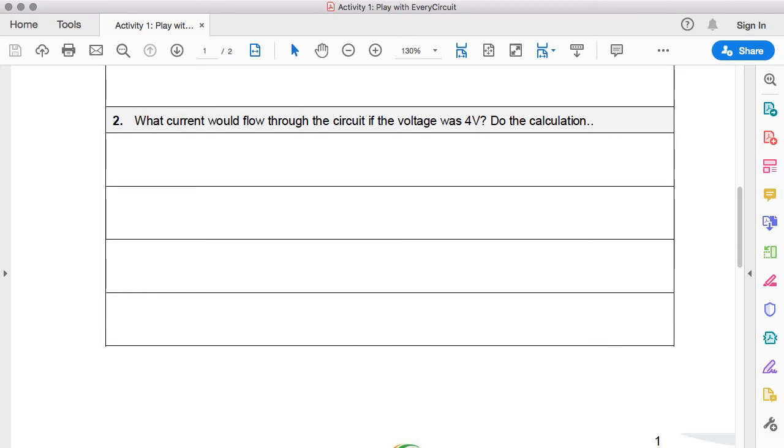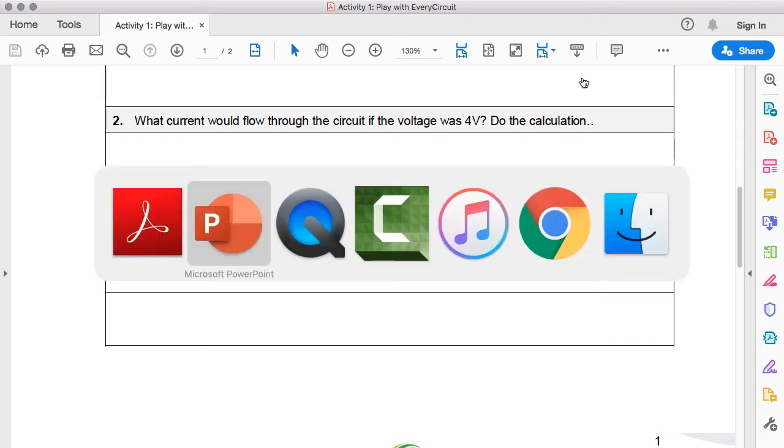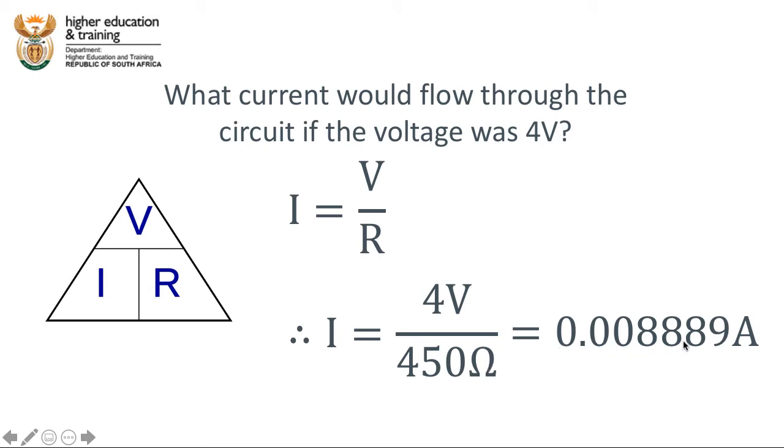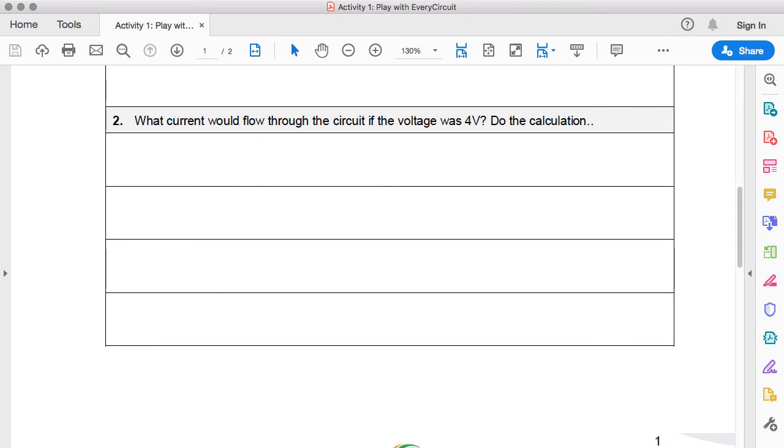Now it asks, what current would flow through the circuit if the voltage was 4 volts? We need to calculate current, so we need to rearrange this mathematical expression to get current is equal to voltage divided by resistance. The resistance hasn't changed, that's still 450 ohms. Therefore, the current is equal to 4 volts divided by 450 ohms. Everything is in standard units, and if you do that on a calculator you will get the answer of 0.008889 amps. We can change that into milliamps, and that'll be 8.889 milliamps.